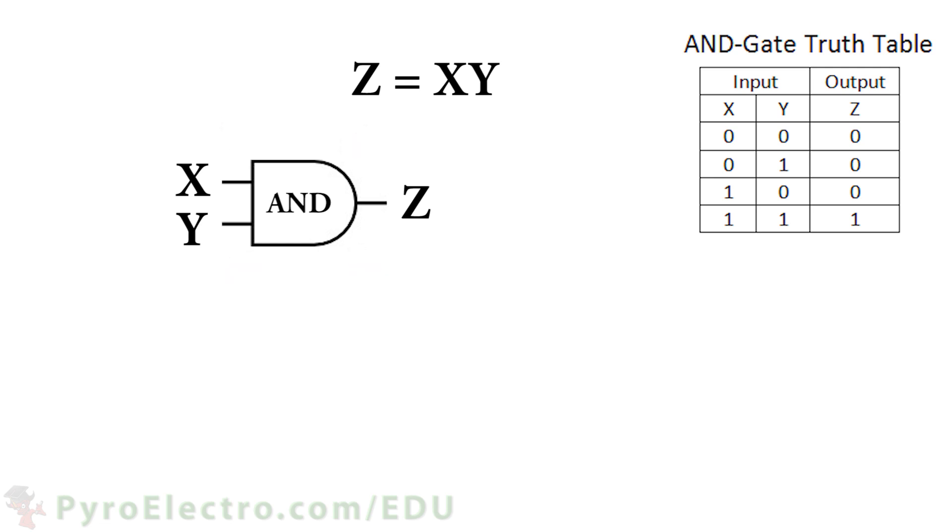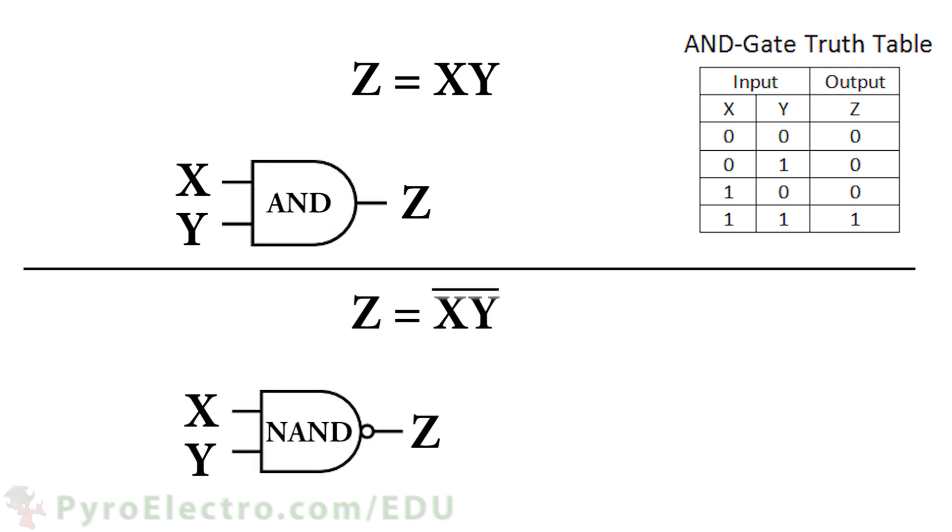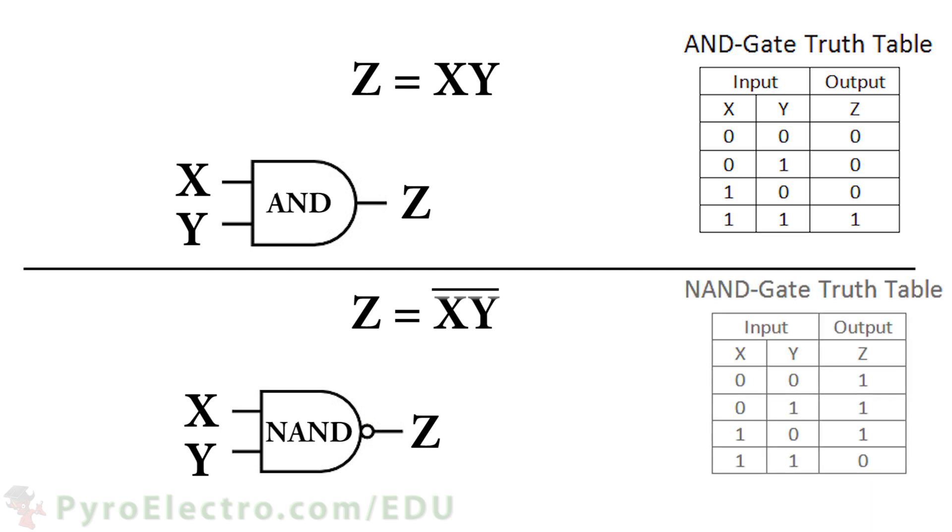A very common type of logic gate is a variation of the AND gate called the NOT AND gate, or NAND gate for short. It gets this name because it is a logic AND gate combined with a NOT gate, and it looks like this. The circle here represents the NOT gate.